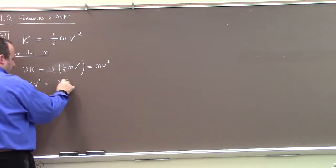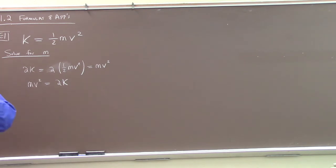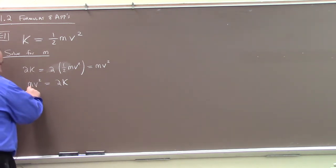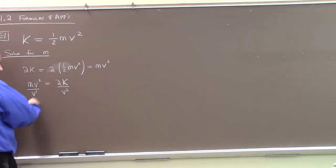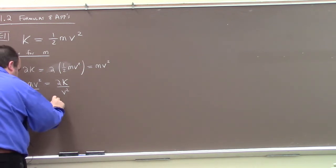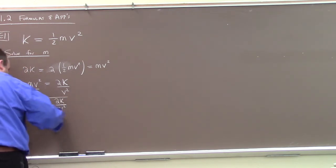We have mv squared equals 2K — you can switch the order. I'm trying to solve for m, so we divide by v squared. If we divide both sides by v squared, the v squareds cancel on the left, and we get m equals 2K over v squared.